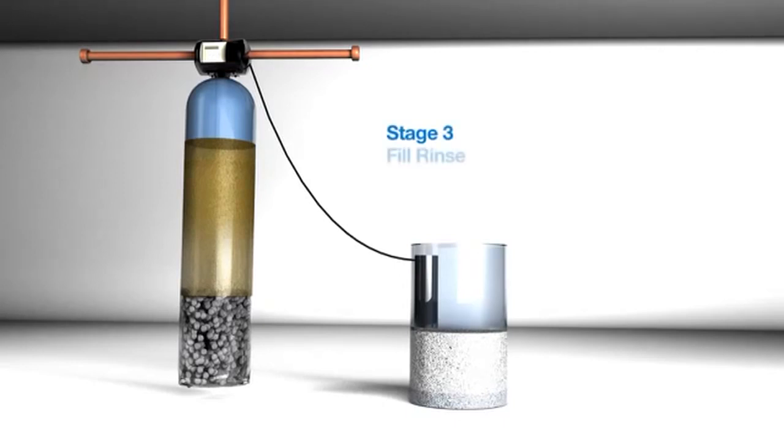Since our resin bed is still expanded, we will need to compress the bed back down. As water comes in and passes down through the resin, the bed is compressed and the resin is rinsed simultaneously. While this is happening, we are also sending water down the fill tube to replenish the brine tank. On a 1.5 cubic foot system, this process takes 9 minutes.